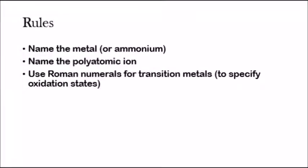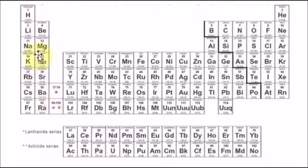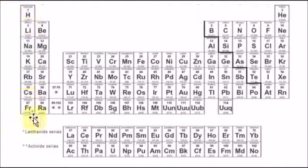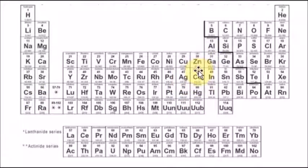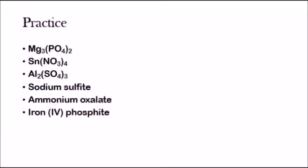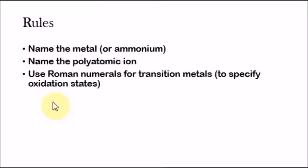The rules for naming a ternary salt or an ammonium salt: we name the metal, or if it's ammonium we just say ammonium, and then we name the polyatomic ion. If our metal is a transition metal — meaning it's not in these two columns right here — then we're going to have to specify the oxidation state. If it's not in these two columns, and it's not silver, cadmium, zinc, or aluminum — silver always has a +1 charge, zinc and cadmium always +2, aluminum always +3 — then we use Roman numerals to specify the oxidation state.